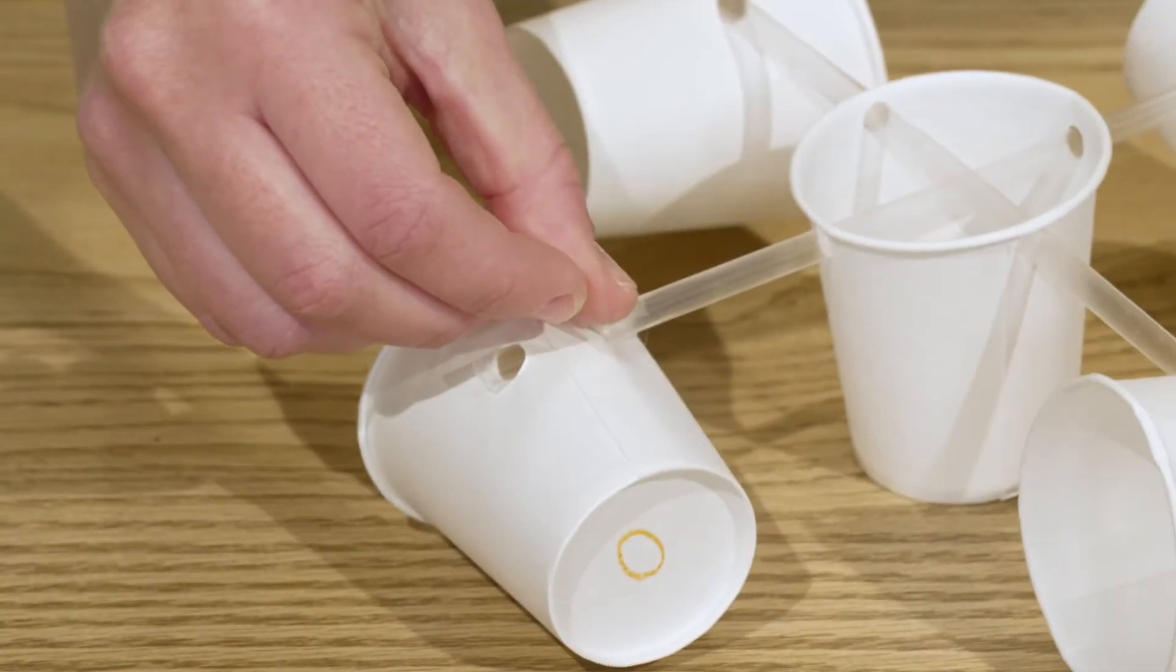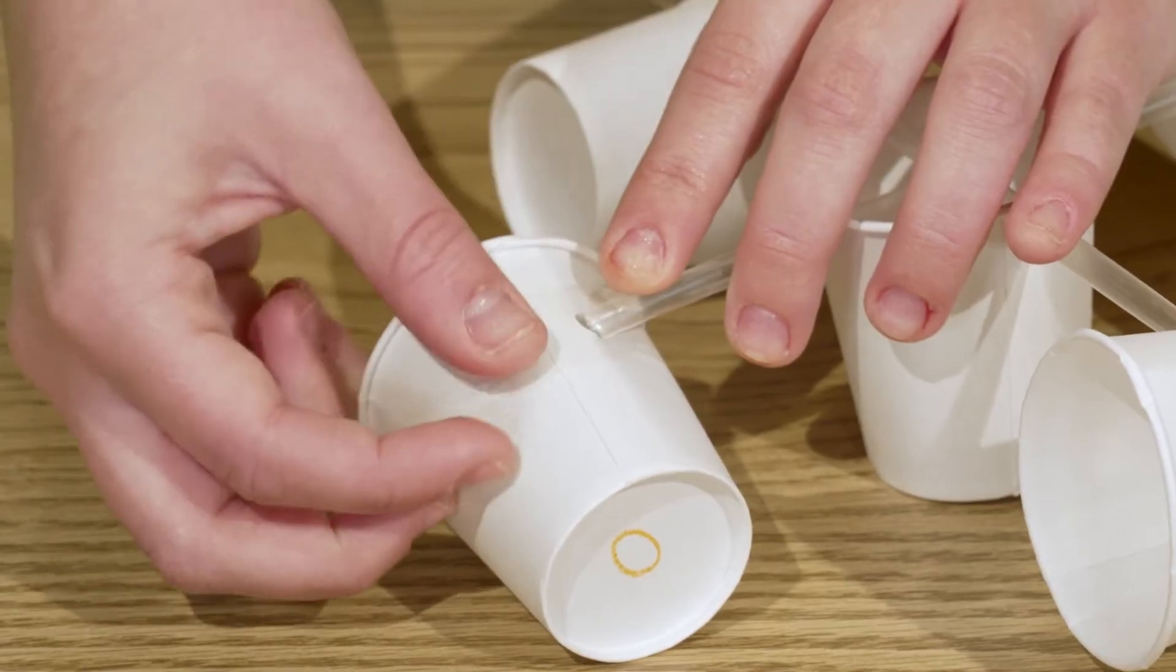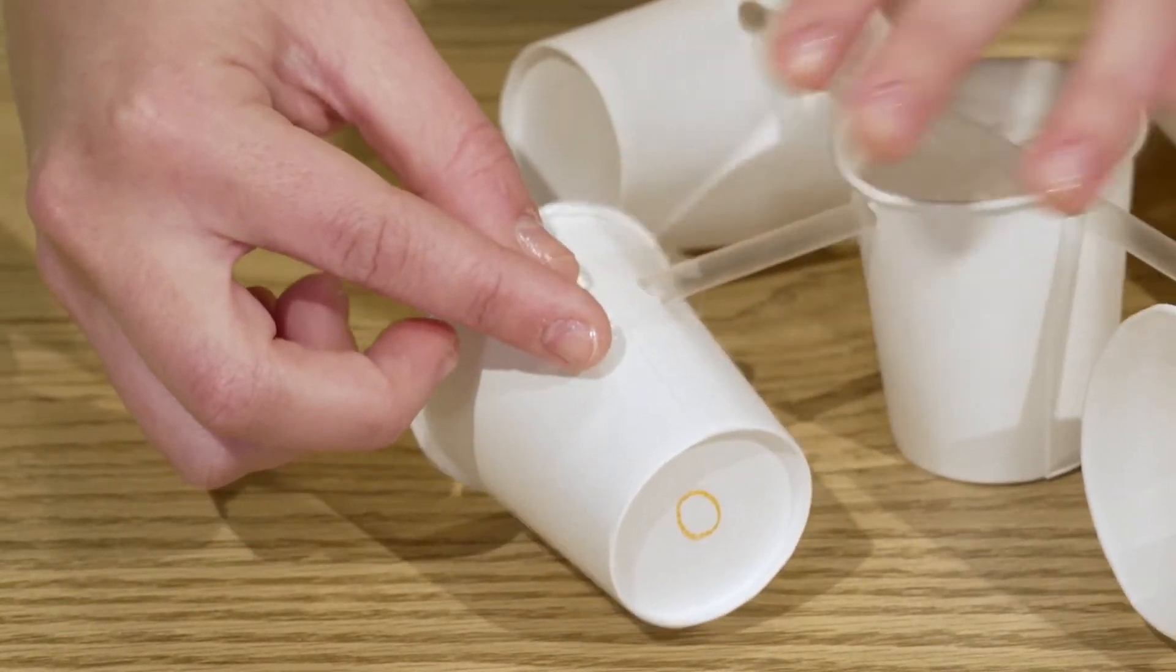If any of your cups are having a hard time staying put on the straw, you can use a little piece of tape to hold it in place.